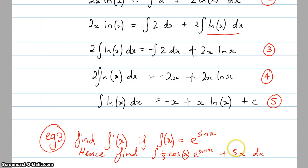We might be able to do the 5x bit okay, but we can't do cos(x) times e to the sin x because there's no product rule for this one.